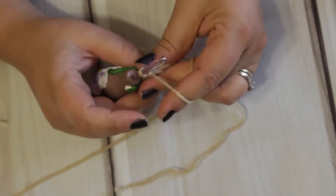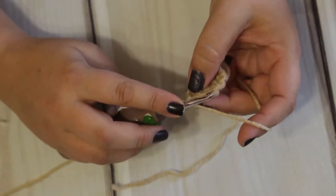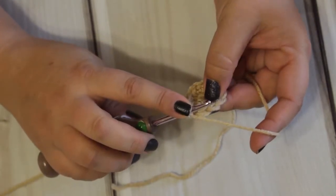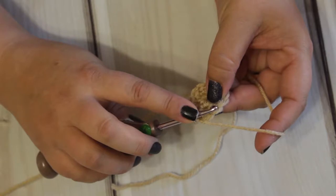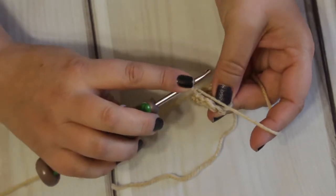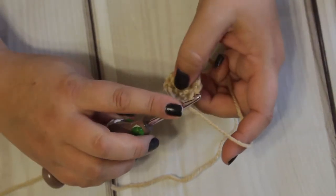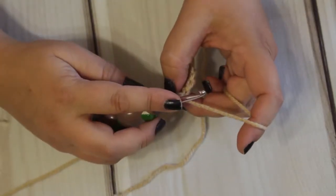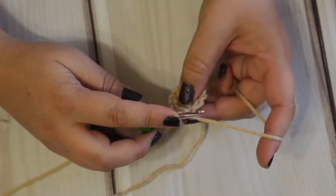So now I'm going to do one single crochet in the first stitch and then I will do two single crochets in the next, and we repeat that five times until we are done with this row and then we should be finishing up with 18 stitches in total.